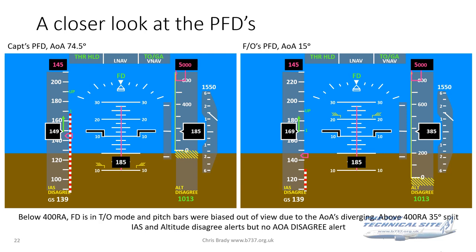Let's take a closer look at the PFDs. These are taken from data in the accident reports for the Ethiopian flight. In this case, the captain's PFD showed alpha at 74.5 degrees, and on the first officer's side alpha was 15 degrees. This was shortly after takeoff, below 400 feet. The two flight directors were different — the pitch bars had been biased out of view because of the divergence of the angle of attacks.